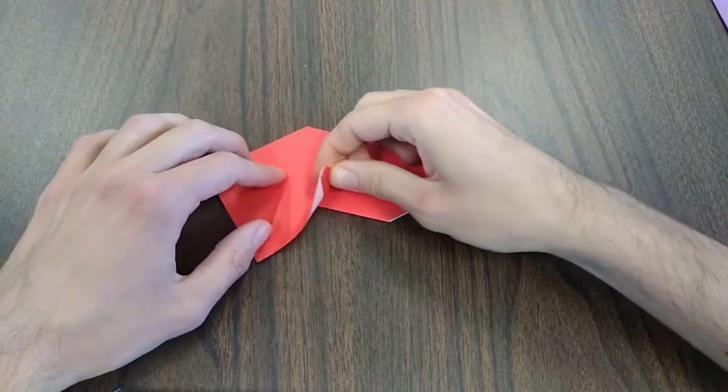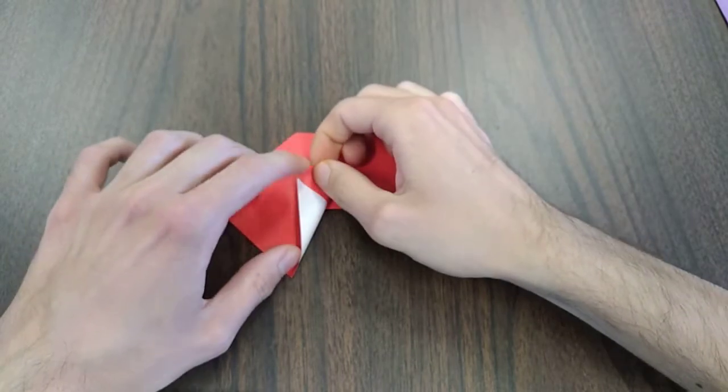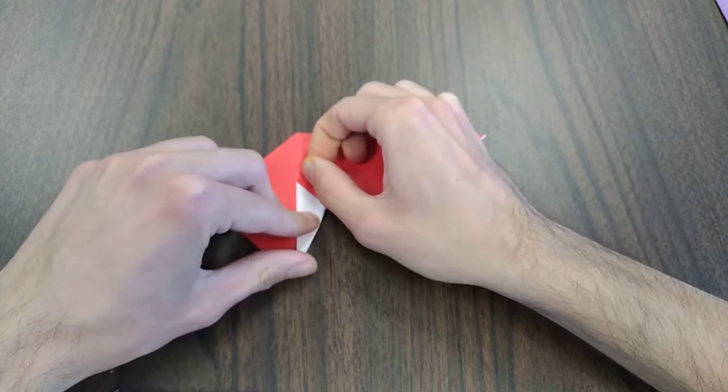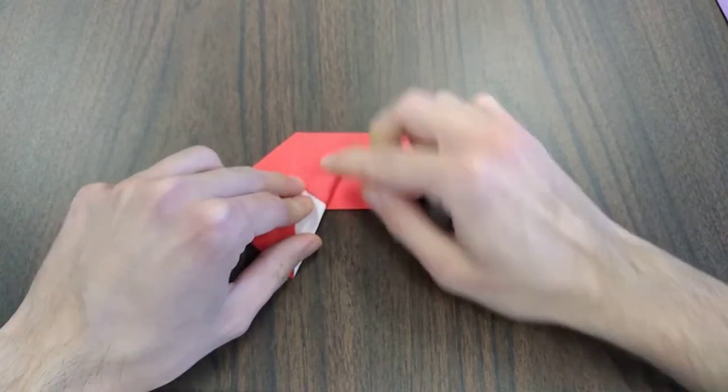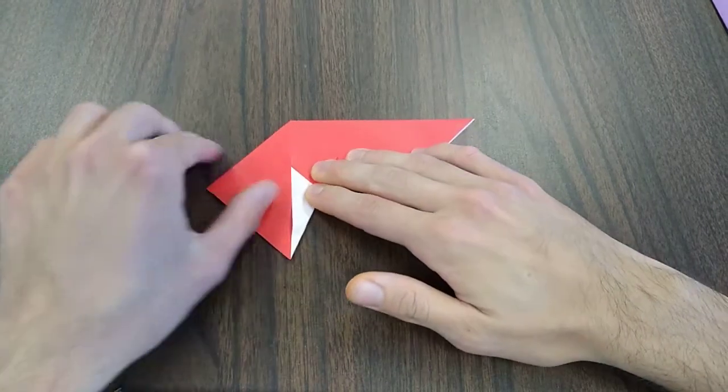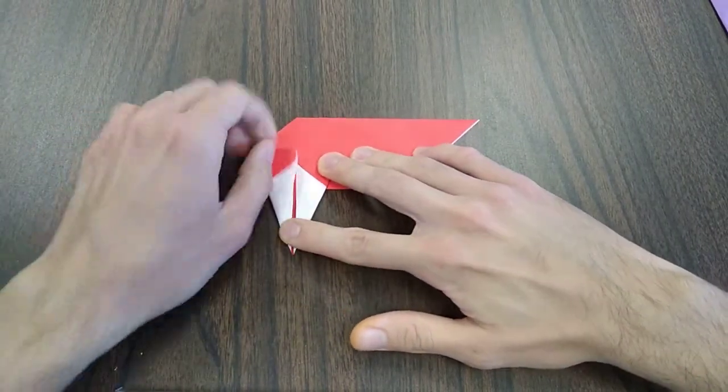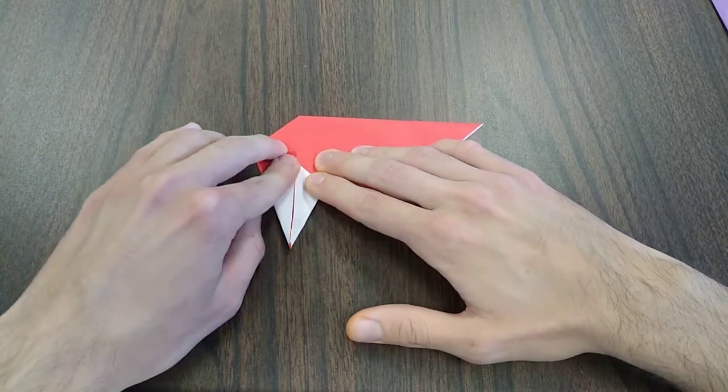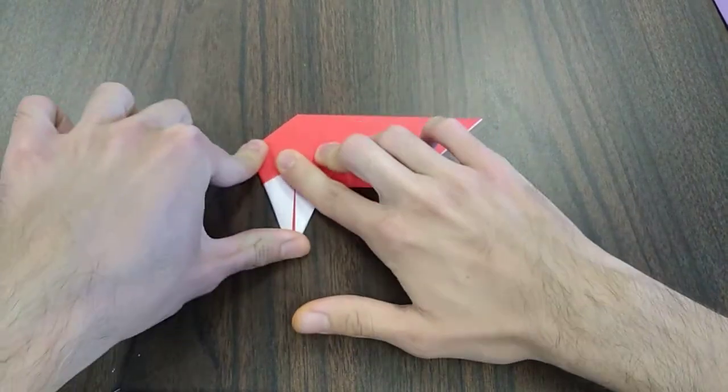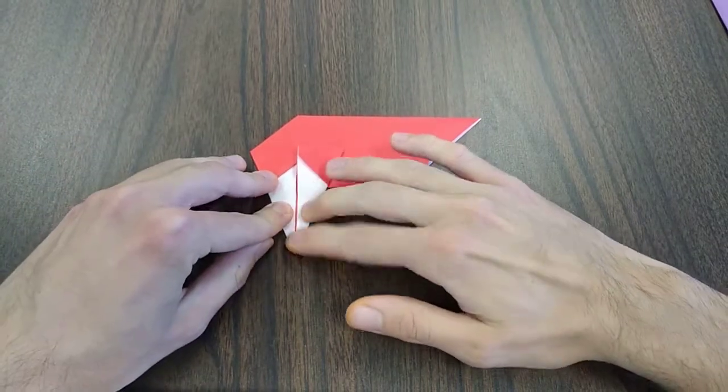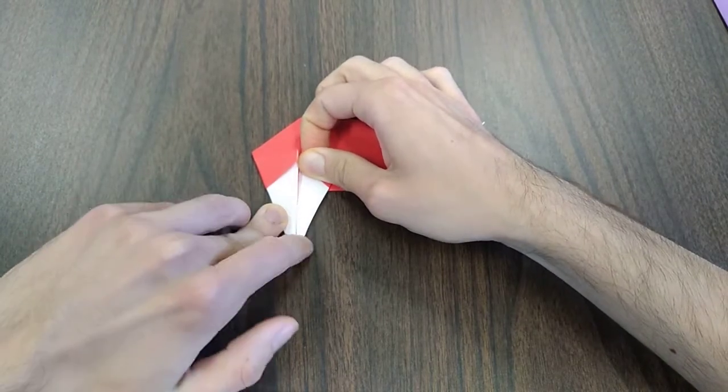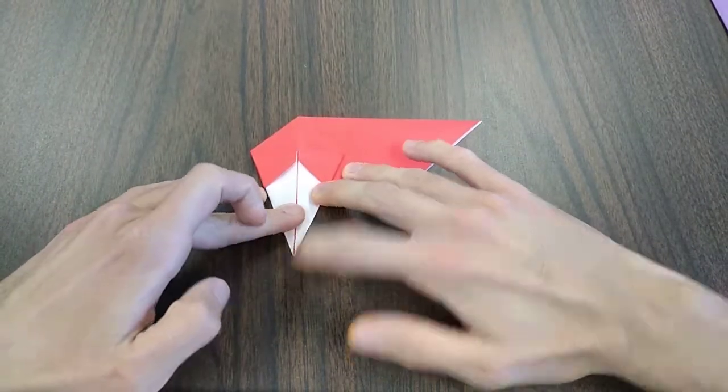So now we're going to fold the right and left flaps so they meet along the center crease. Perfect.